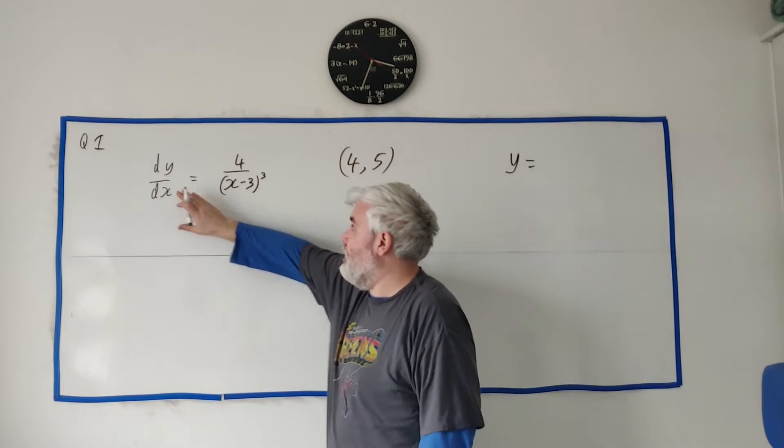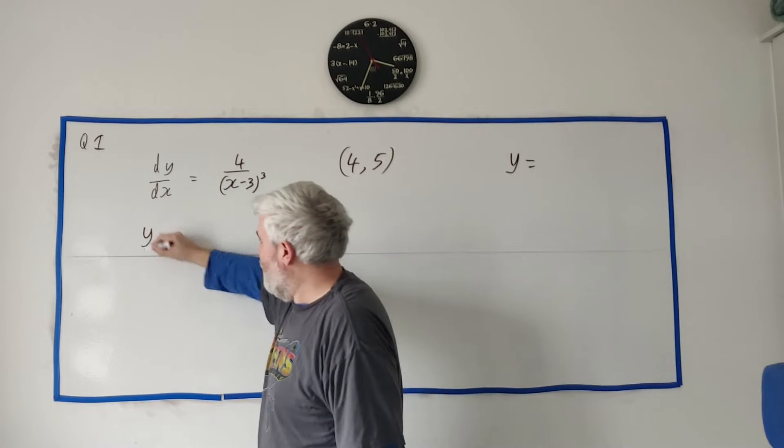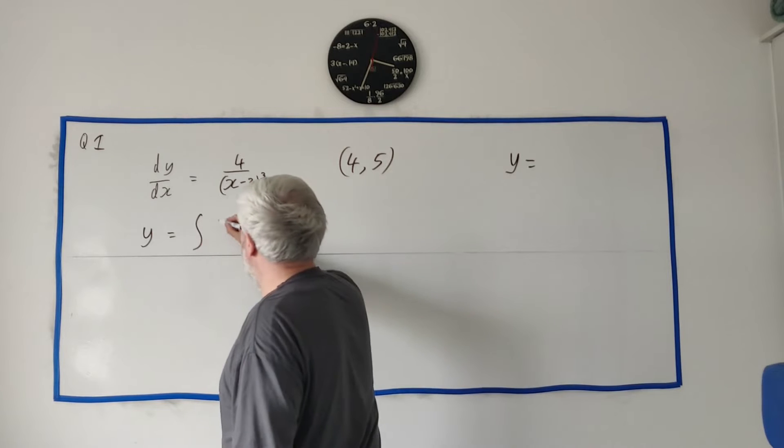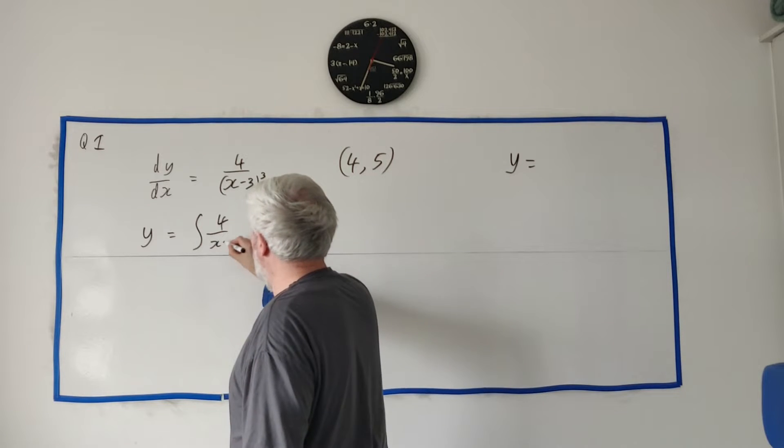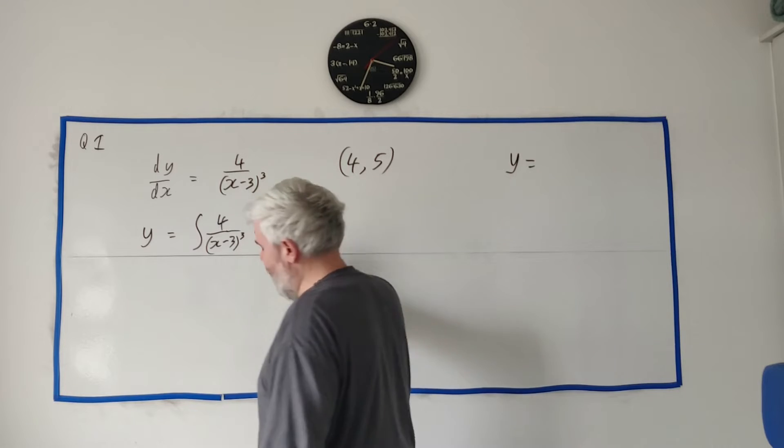So what we need to do is integrate this. Integrate this, we get y. So, let me just write that. y is equal, and we need to integrate this side. So the integral of 4 over (x-3) to the power of 3, with respect to x.